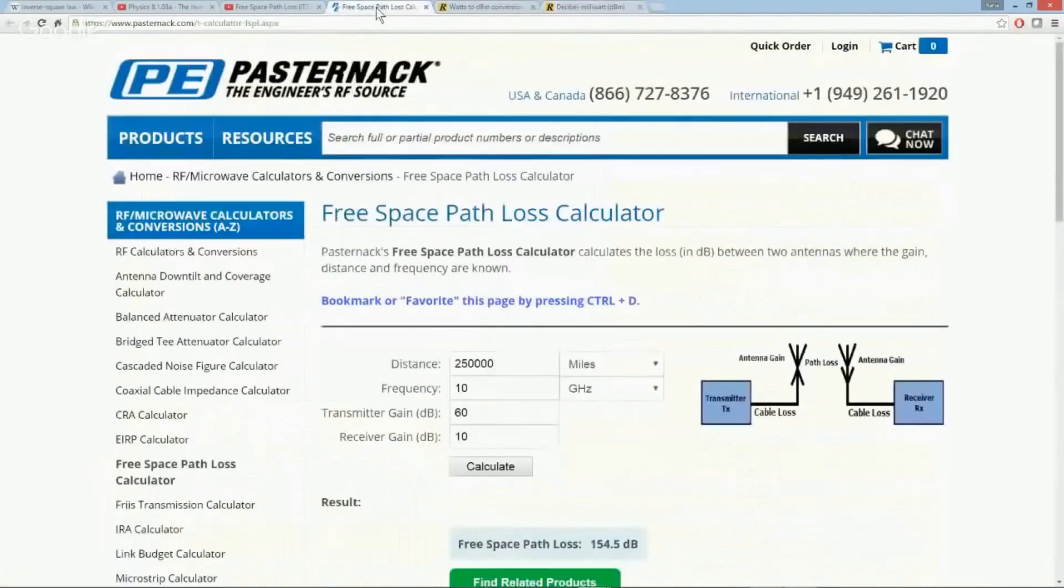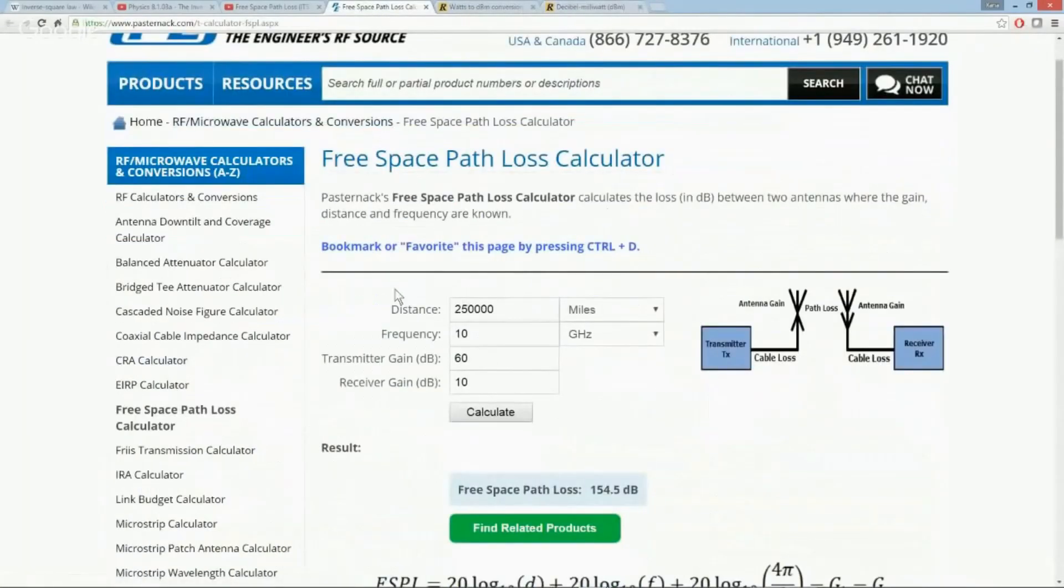We're going to look at free space loss calculators. Basically what it does is it lets us put in distances in miles, kilometers, meters, centimeters, yards, feet, inches—whatever. We're going to use miles because this is America. Next factor we have is the frequency that we're going to be using. You can enter it in gigahertz or megahertz, and we're going to show you a demonstration of both, showing that as the frequency goes higher, the path loss substantially increases.